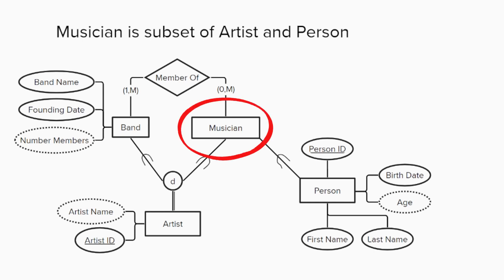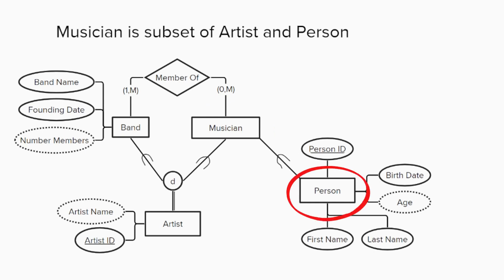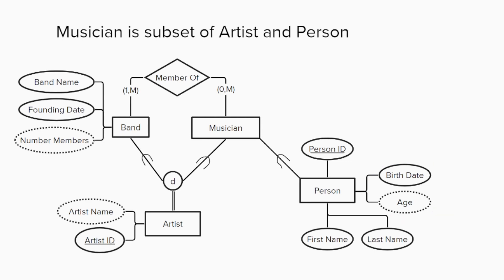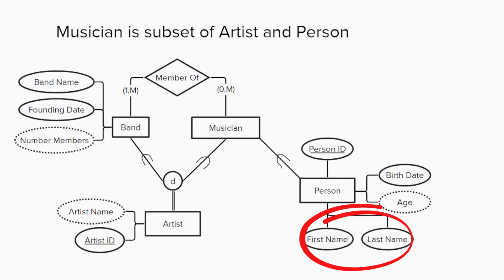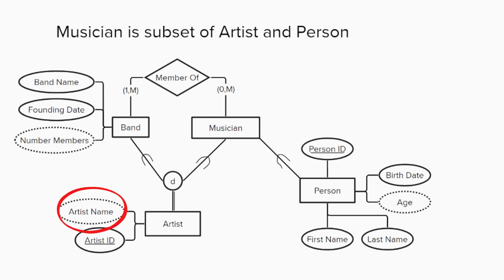For example, musicians are simply people, and we can model the musician entity as a subset of a person entity. This allows us to clean up the model by moving the birth date and derived age attributes from musician to the person entity. The person will also possess a primary key person ID as well as a first and last name. Each musician now inherits their first and last name from the person instance, but this means we need to change the name possessed by artist. The new artist name will be a derived attribute — the first and last name of the musician, which actually comes from the person in the case of a solo artist.